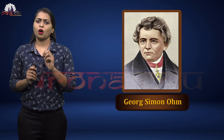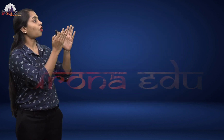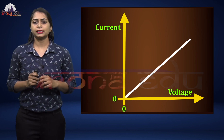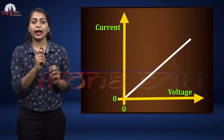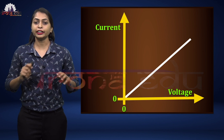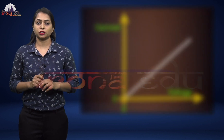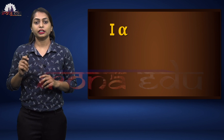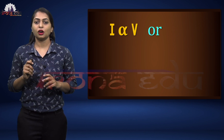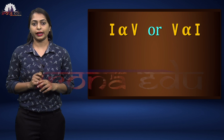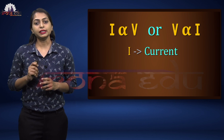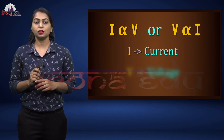He conducted a very simple experiment wherein he plotted the current flowing through the circuit against the voltage applied. He found that the graph looks somewhat like this. From this we can understand that current and voltage are directly proportional to each other, that is I is proportional to V, or V is proportional to I, where I is the current and V is the voltage.